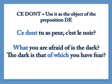This is the last example before we practice. Ce dont — use it as the object of the preposition de. Ce dont tu as peur, c'est le noir — 'What you are afraid of is the dark.' Or remember, 'the dark is that of which you have fear' — that's the dont.